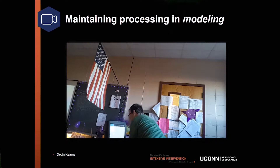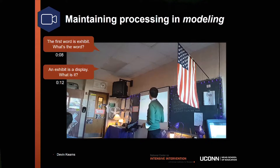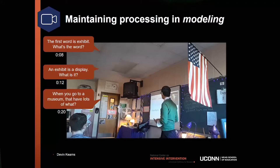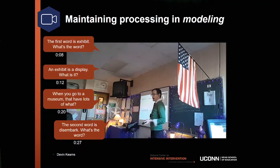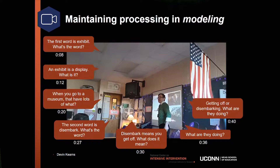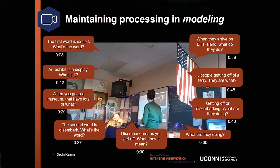In the demonstration lesson: 'I want to share a couple vocabulary words that are going to be in the story. The first word is exhibit. What's the word?' [Students: 'Exhibit.'] 'An exhibit is a display. What is it?' [Students: 'A display.'] 'We're talking about a display like at a museum—they have lots of what?' [Students: 'Exhibits.'] 'The second word is disembark. What's the word?' [Students: 'Disembark.'] 'Disembark means to get off. What does it mean? It means to get off like a boat. These soldiers are getting off—what are they doing?' [Students: 'Disembarking.'] 'Here's another example of people getting off a ferry—so they're what?' [Students: 'Disembarking from the ferry.'] 'In the text today, the girl and her family go to visit the Ellis Island Museum, take a ferry—when they arrive, what do they do?' [Students: 'Disembark.']'